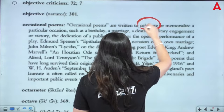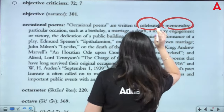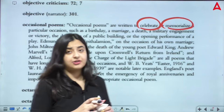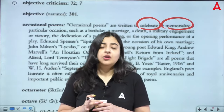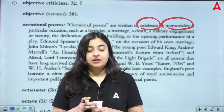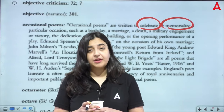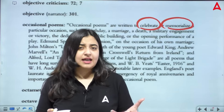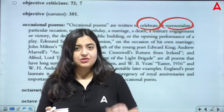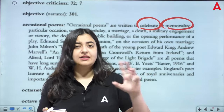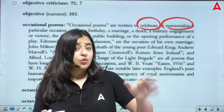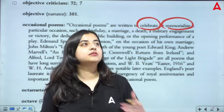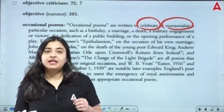Occasional poems can also serve to memorialize some event. So poems of death are also included — you are memorializing someone's death and writing a poem about them. Some of these are elegies. If there is an elegy written on a person's death and dedicated to them, then that poem is also occasional. Like we have the Book of the Duchess by Geoffrey Chaucer.